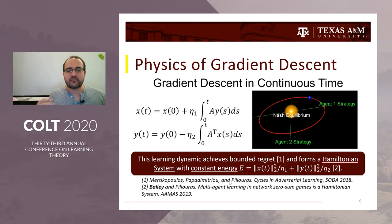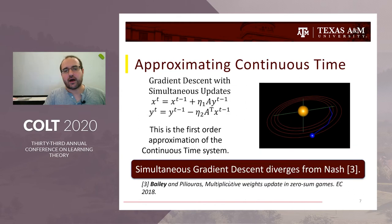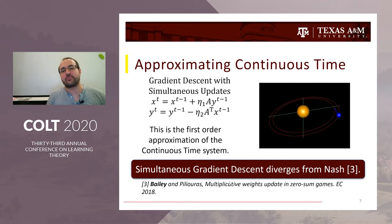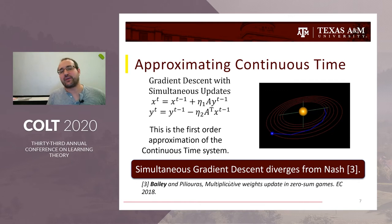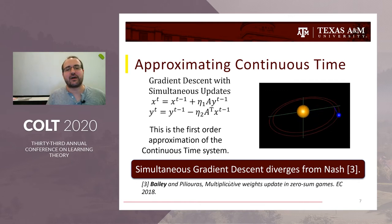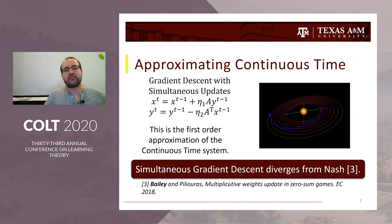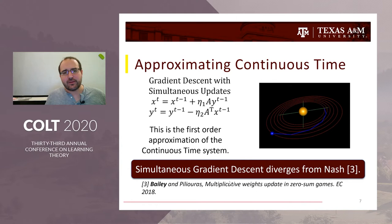This connection to physics explains something I showed a couple years ago with respect to simultaneous updates — they actually diverge from the Nash equilibrium. This is simply because simultaneous updates correspond to a first-order approximation, and as a result, standard gradient descent diverges from Nash equilibrium.